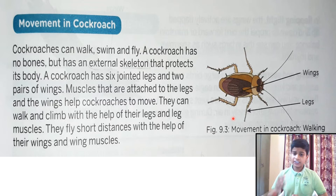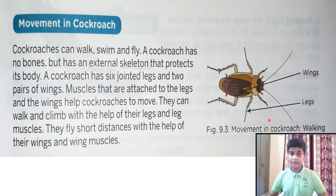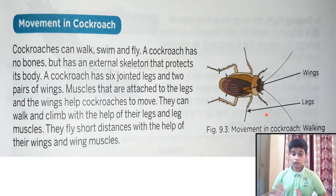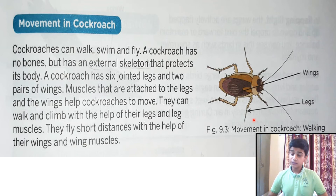This is why insects are generally crawling. They can only go a short distance. Now let's talk about the cockroach's body parts, which are divided into two: the first is the wings, and the second is the legs.